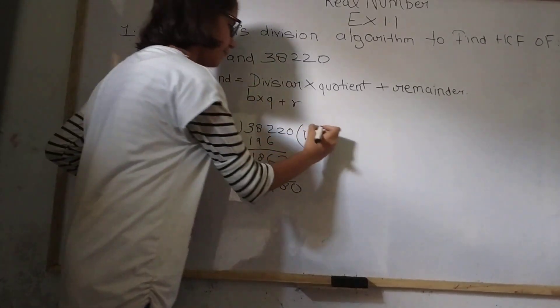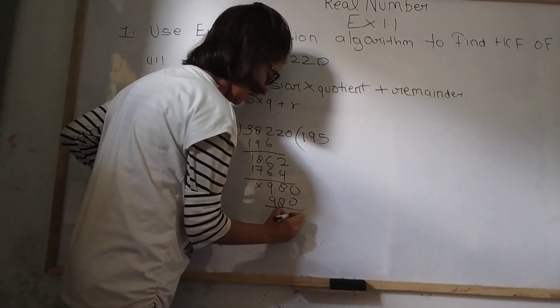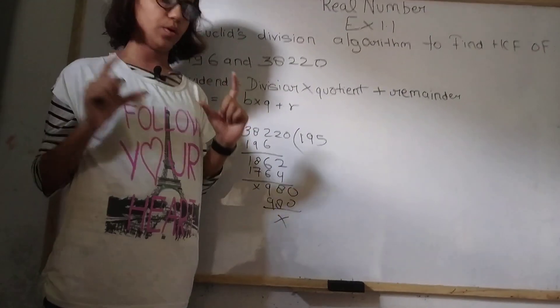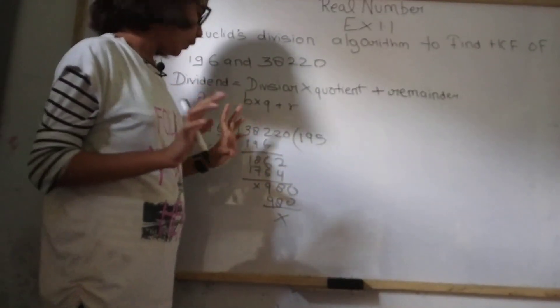Now 5 times we'll multiply 5 times. So 9, 8 and 9, 8 cancel, nothing means 0. So now our this whole it is divisible. Nothing is left.